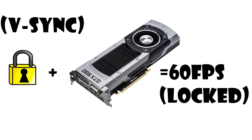This is the most common solution to screen tearing. What vSync does is that it locks your GPU to produce 60fps. If you want to know more about vSync, click on that eye icon.